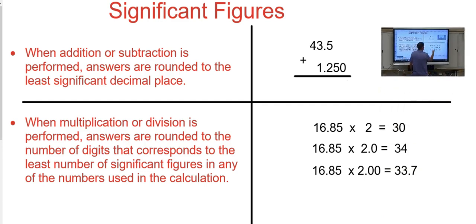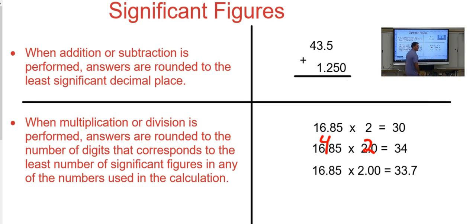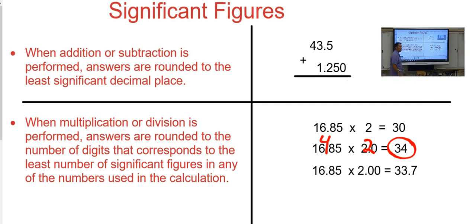Same math — now 16.85 has four sig figs, but this one now has two sig figs because there is a decimal. So now your answer is two sig figs long, and 34 is a more accurate answer than 30.